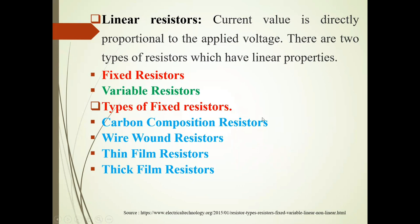Fixed resistors are again divided into 4 parts. First is carbon composition resistors, second is wire wound resistors, third is thin film resistors, and fourth is thick film resistors.